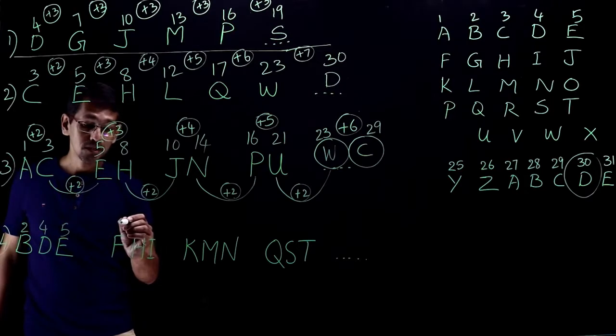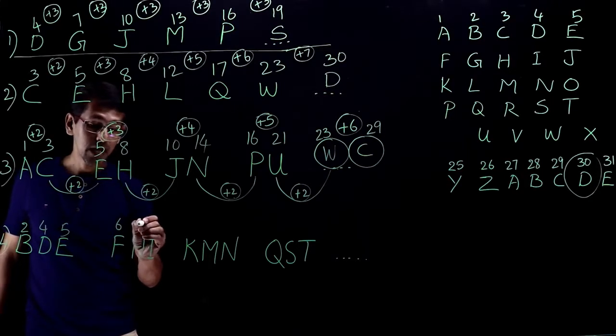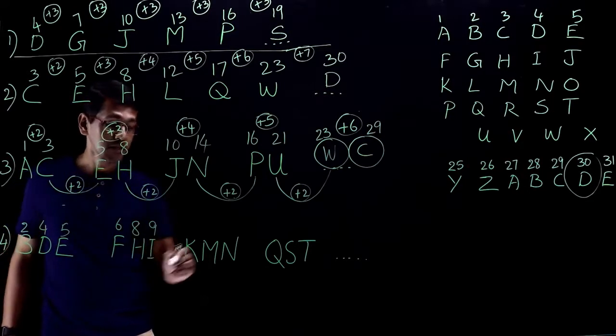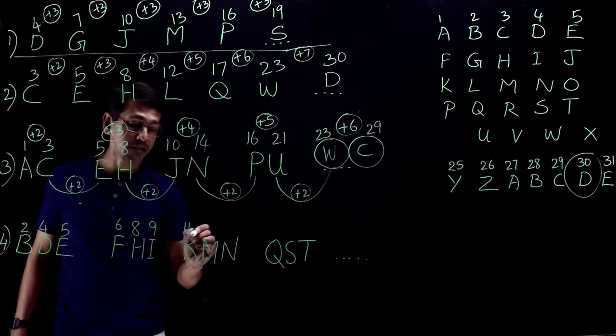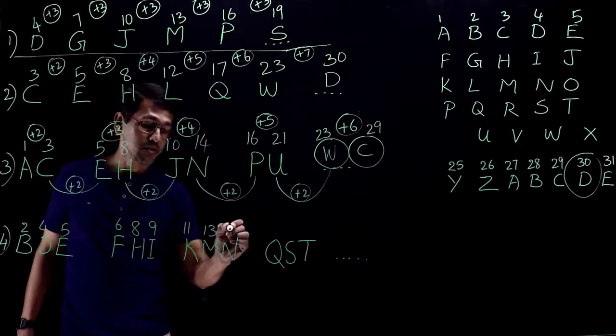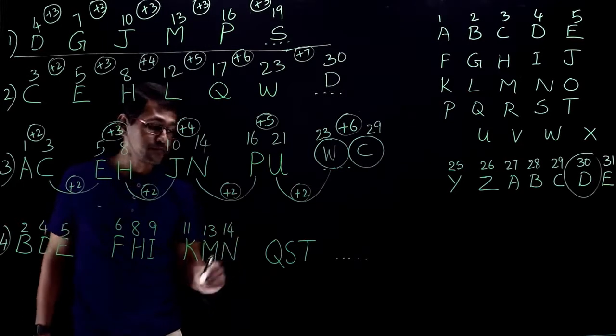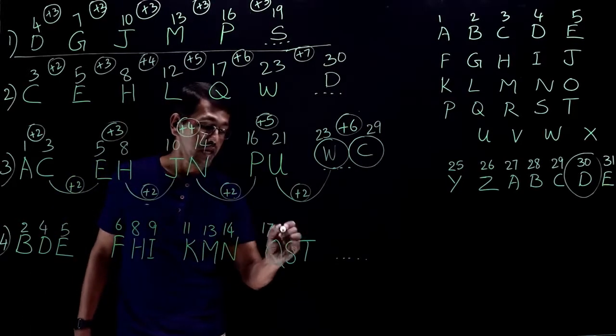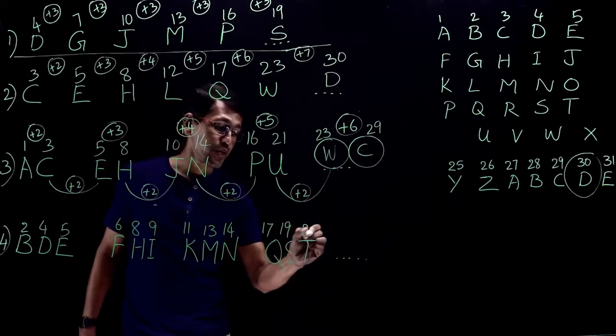Question number four. What is it? BDE, FHI, KMN, QST. So B is 2, D is 4, E is 5. F is 6, H is 8, I is 9. K is 11, M is 13, N is 14. Q is 17, S is 19, T is 20.